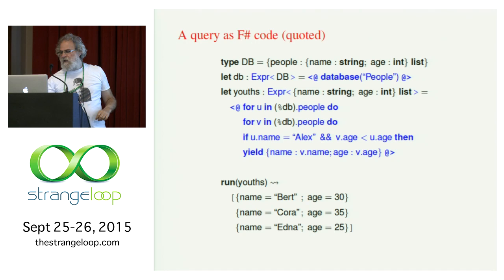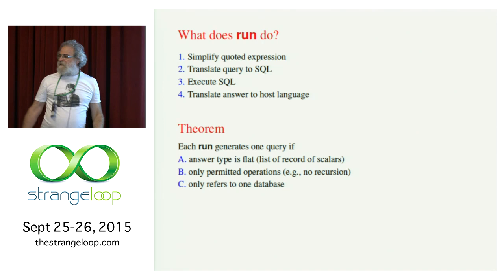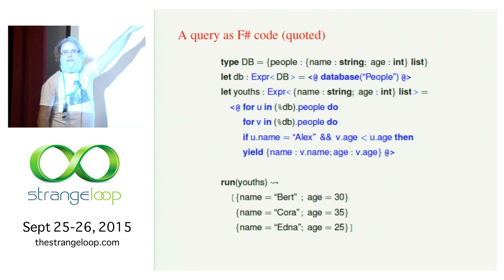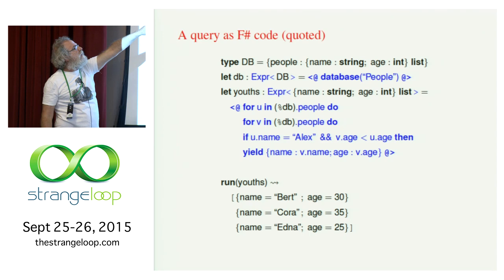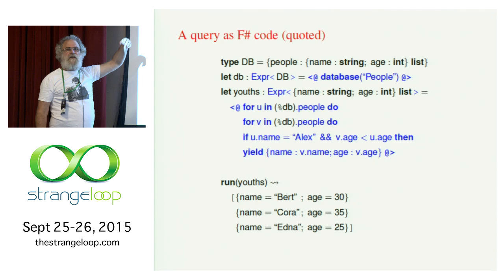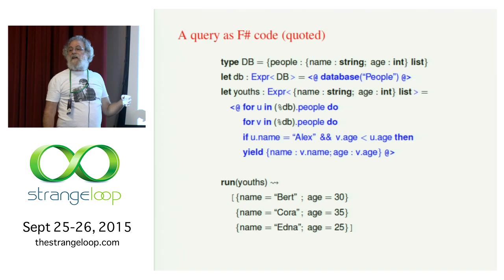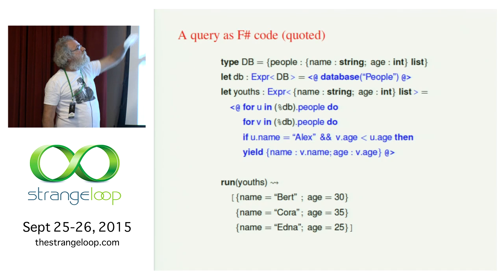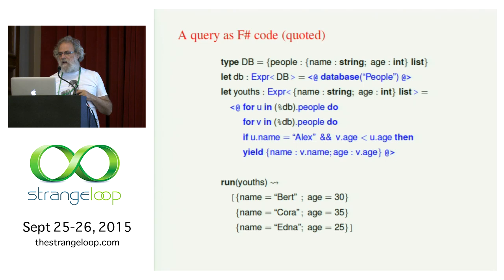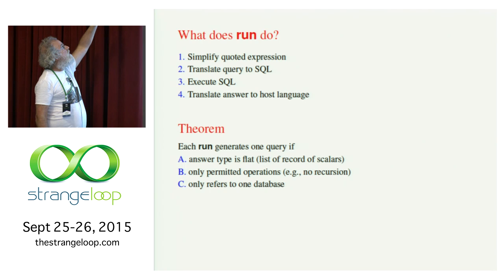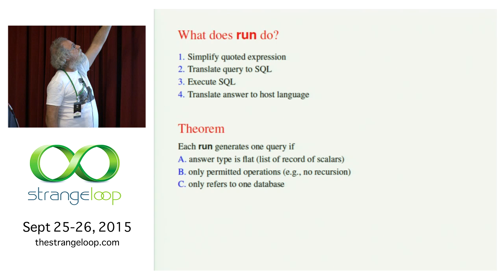We've represented this as a term so we have a post-processor called 'run'. Run takes in this data structure and, since it looks a lot like SQL, it can convert it directly to SQL. The steps that run takes: it's going to simplify the quoted expression. The bits written in black with percent signs in front of them are anti-quotation — there must be an Expr term of the appropriate type that goes in there. DB is a term of type Expr DB. We simplify the quoted expression, translate it to SQL, execute the SQL, and translate the answer back to the host language.